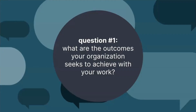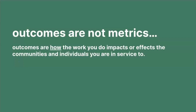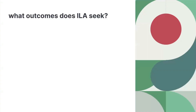Let's jump right into these questions and start to work through this framework. The first question is: what are the outcomes your organization seeks to achieve with your work? I want to be really clear that what we're trying to do with this question is put aside metrics for a moment, put aside your website, and start to think really broadly and at a high level. What does your organization seek to achieve? For those of you that have gone through a logic model process or a theory of change, you're probably familiar with this concept of outcomes or strategies.